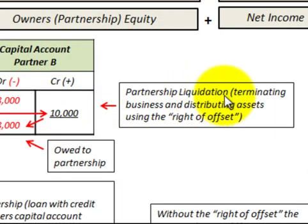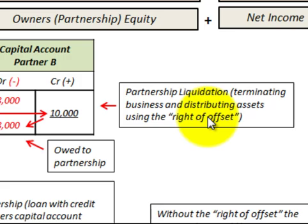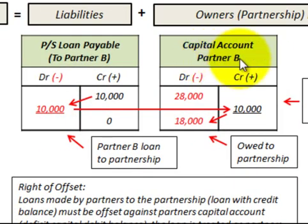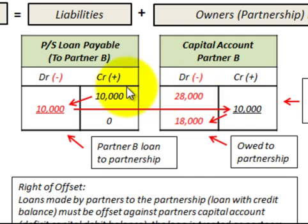Here we're going to be looking at a partnership liquidation where we're terminating the business and distributing the assets using the right of offset. Partner B has a capital account with a deficit of $28,000 — that's the amount they owe to the partnership. And then partner B has made a loan to the partnership for $10,000, so the partnership has a loan payable to partner B for $10,000.